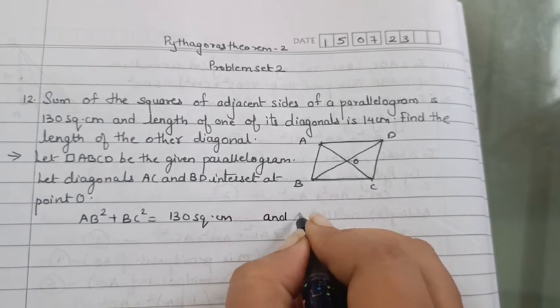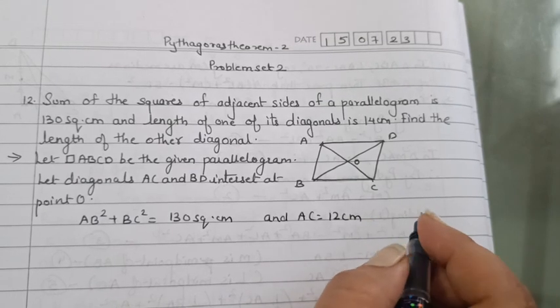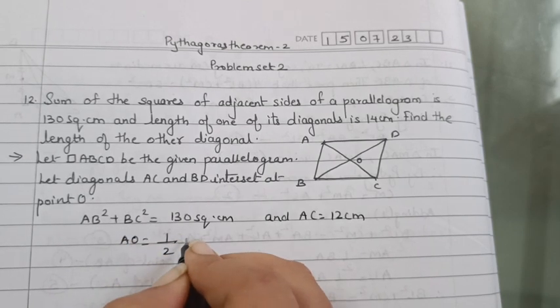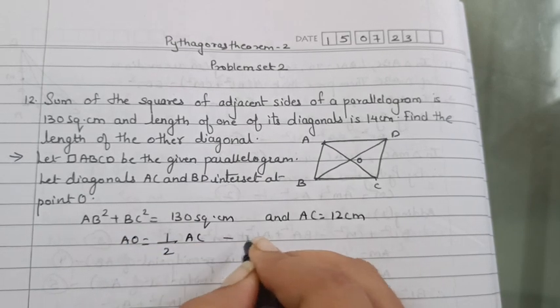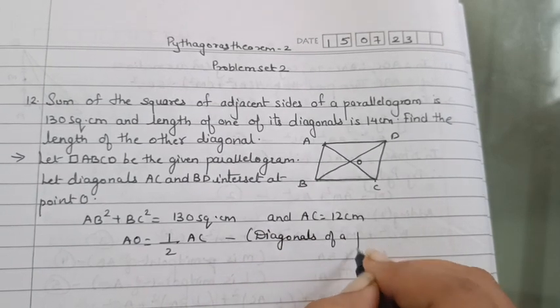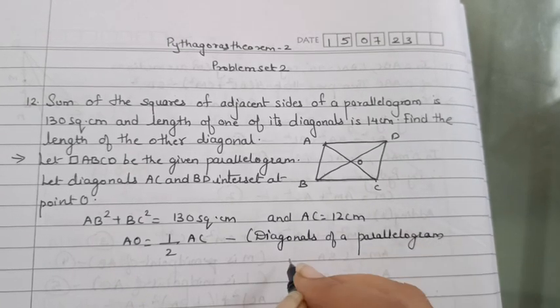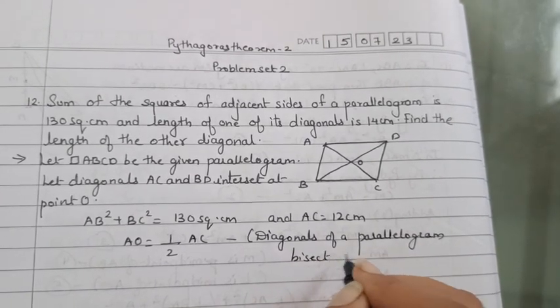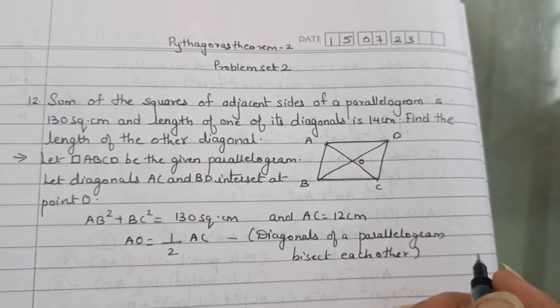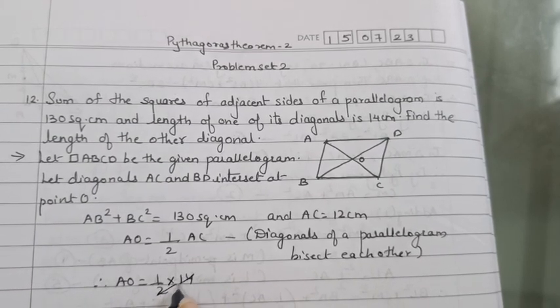And one of the diagonal, so AC is 14 cm. Now if AC is 14 cm, AO is half of AC. Why? Because diagonals of a parallelogram bisect each other.